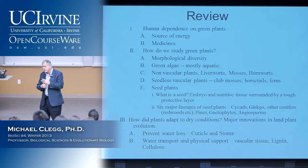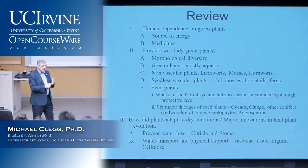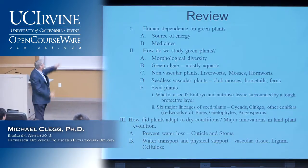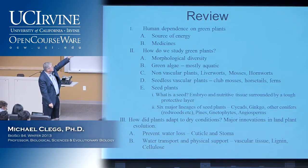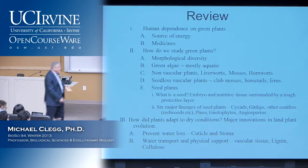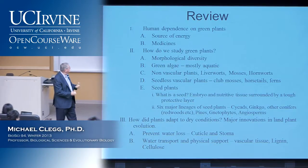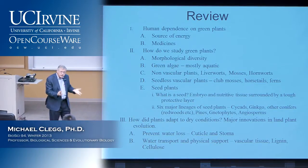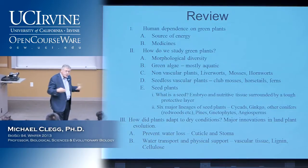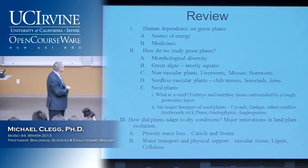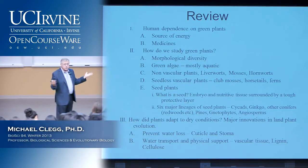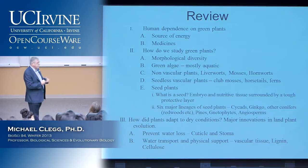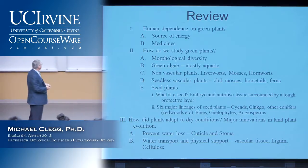Examples of non-vascular plants were liverworts, mosses, and hornworts. Then we had seedless vascular plants — this is before the evolution of seed but after the appearance of vascular tissue. Clubmosses, horsetails, and ferns, which you're all familiar with, are seedless vascular plants.